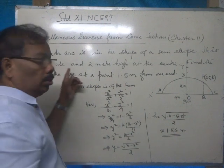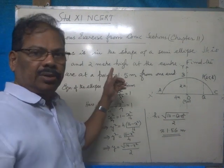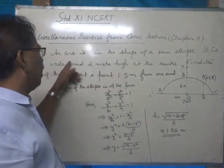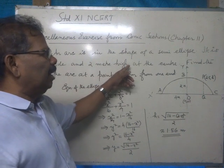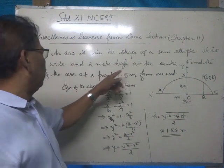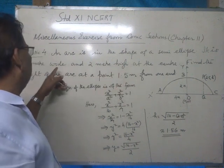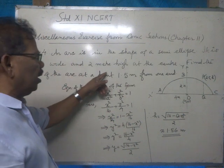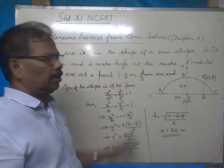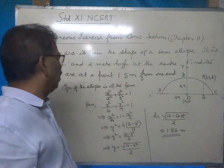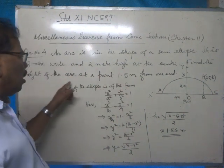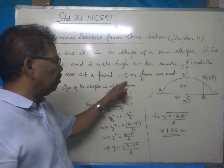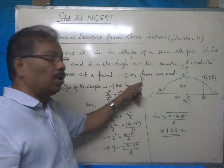Now question number four in the miscellaneous exercise. An arc is in the shape of a semi-ellipse. It is 8 meter wide and 2 meter high at the center. Find the height of the arc at a point 1.5 meter from one end.